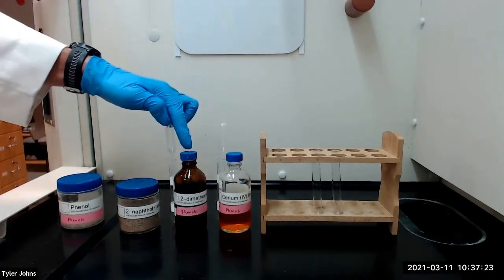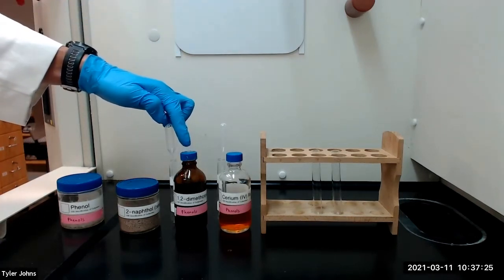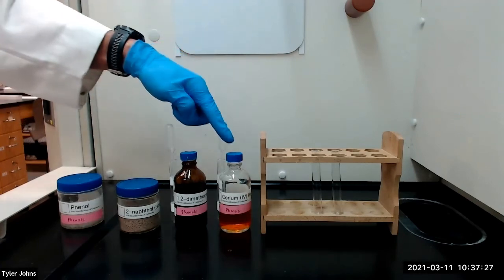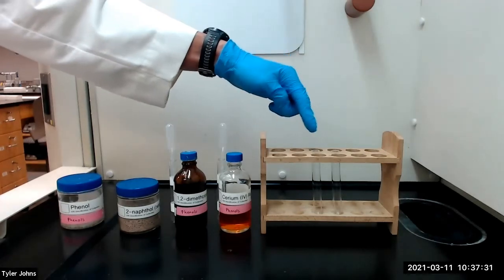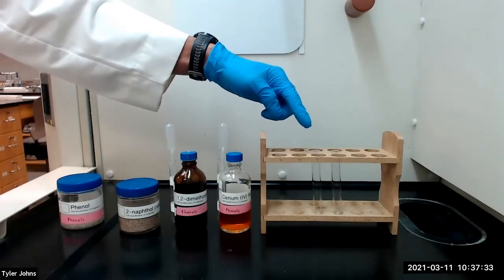We will begin by adding 3 milliliters of 1,2-dimethoxyethane and 0.5 milliliters of cerium-4 reagent to two dry test tubes and gently shake the solution to mix.